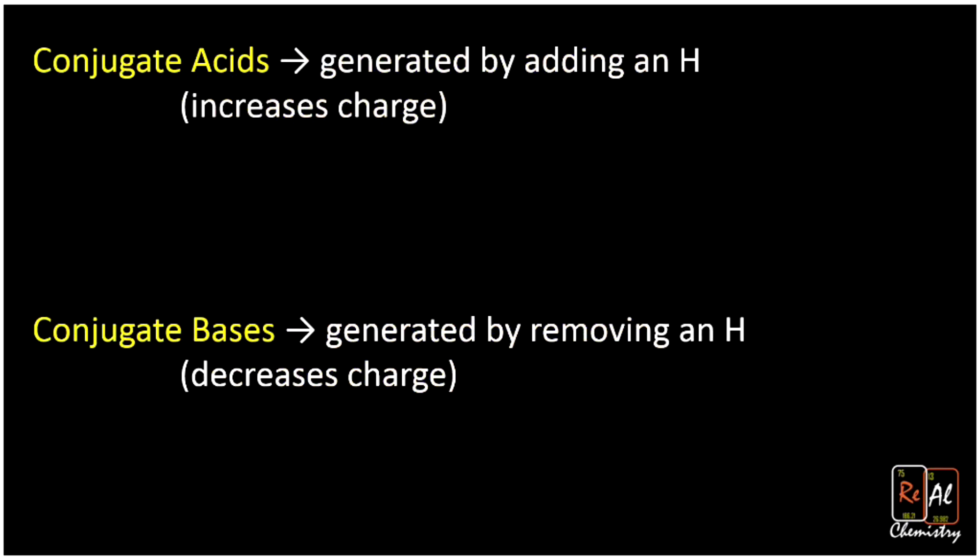So one thing to keep in mind is how do you generate a conjugate acid? Well, we make it by adding an H+. So just like we saw in the previous slide, we generated conjugate acids from bases that have gained a hydrogen. And so that means, say we had H2PO4-, and we want to know, what is the conjugate acid of that guy?